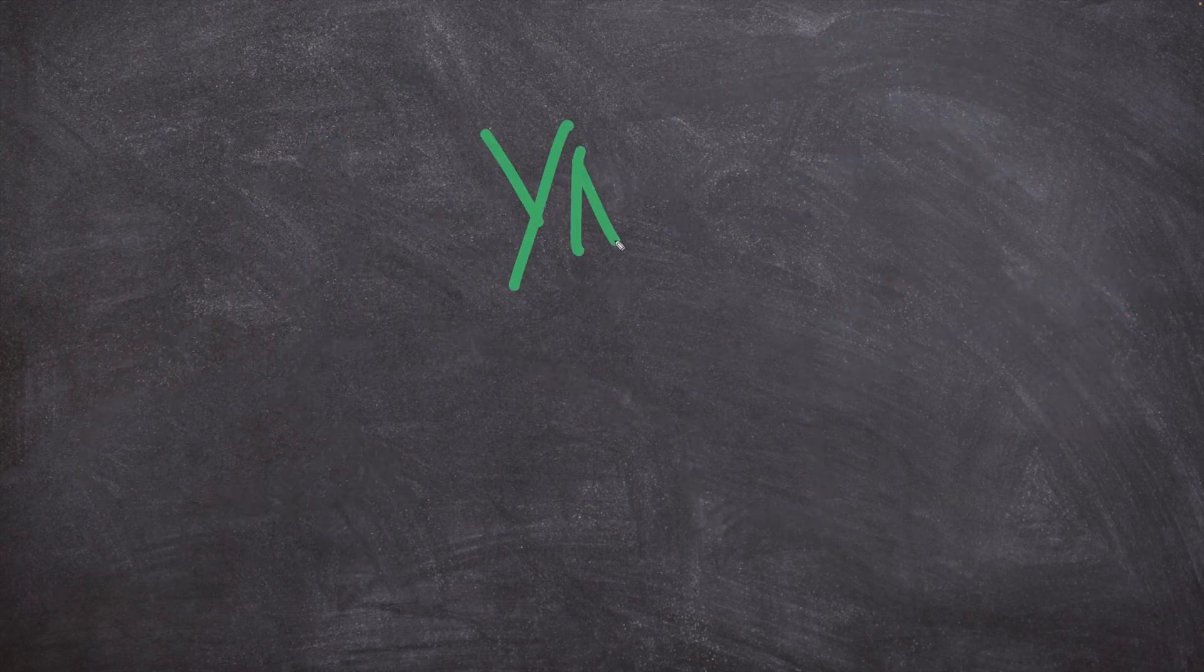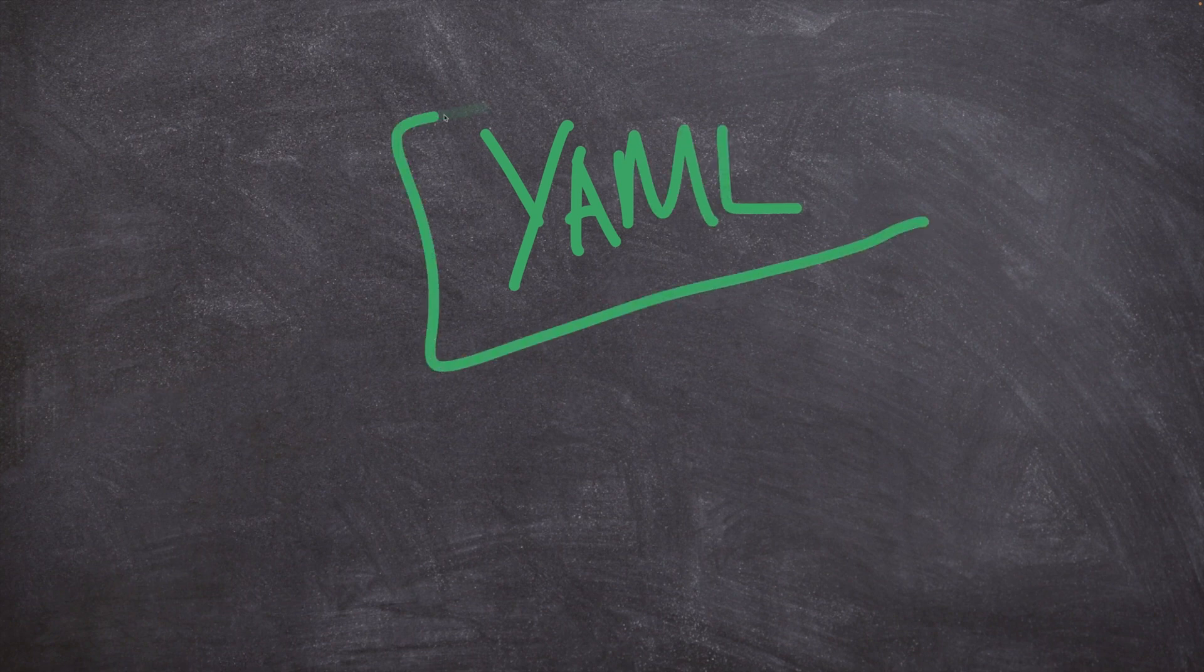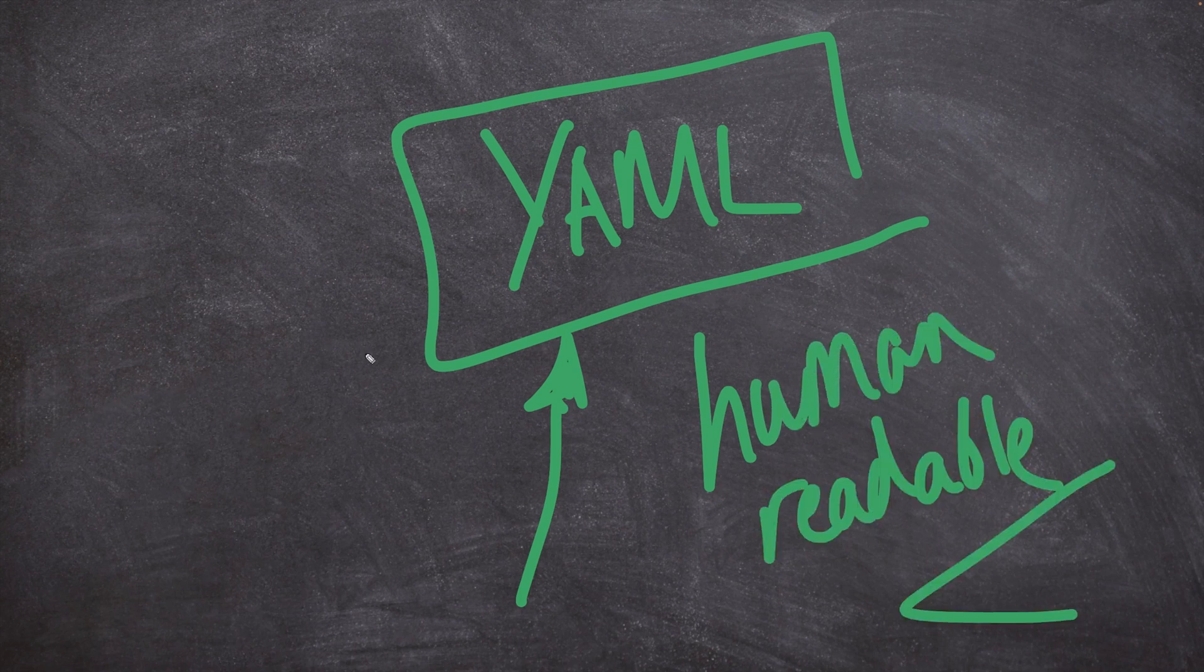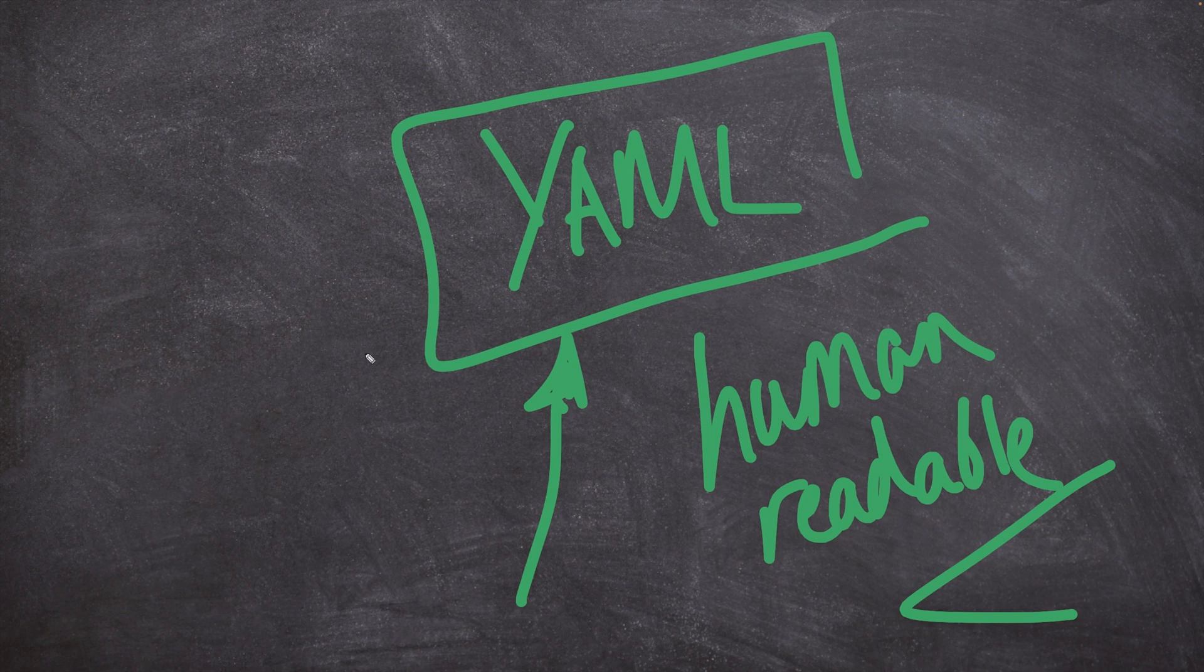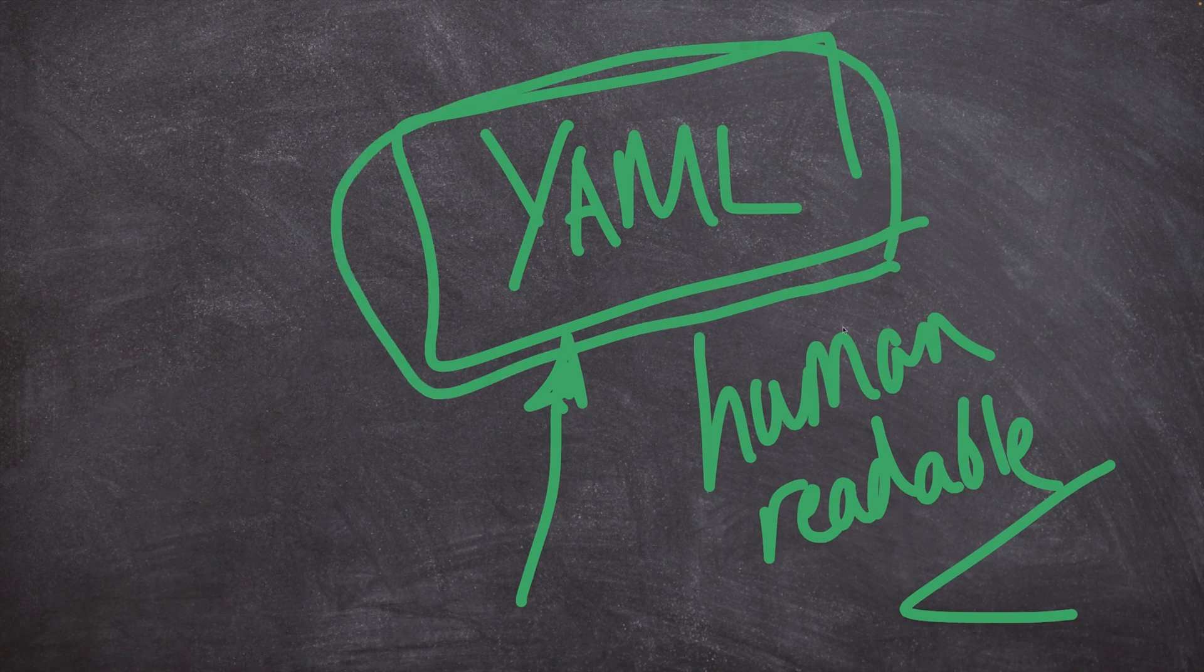As we move throughout this course, there's going to be a strong emphasis on something known as YAML. This is a file format designed to be very human readable, but it allows us to utilize programmatic logic like Python code, except this time the code we're writing doesn't really look like code. It's very easy on the eyes and really easy for system administrators to understand.